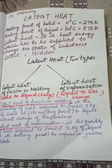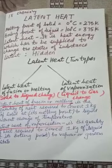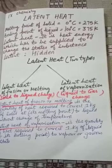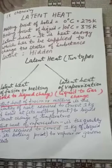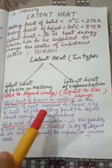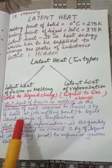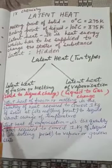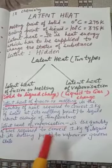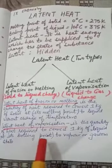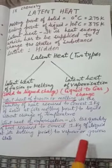Please note, children, that the heat energy which is supplied to change the states of matter does not increase the kinetic energy of the particles present in the substance. Hence, no rise in temperature. Now, let us define: latent heat of fusion or melting is the quantity of heat required to convert 1 kg of solid at its melting point to liquid without change of temperature. Latent heat of vaporization is the quantity of heat required to convert 1 kg of liquid at its boiling point to vapors or gaseous state. Thank you.